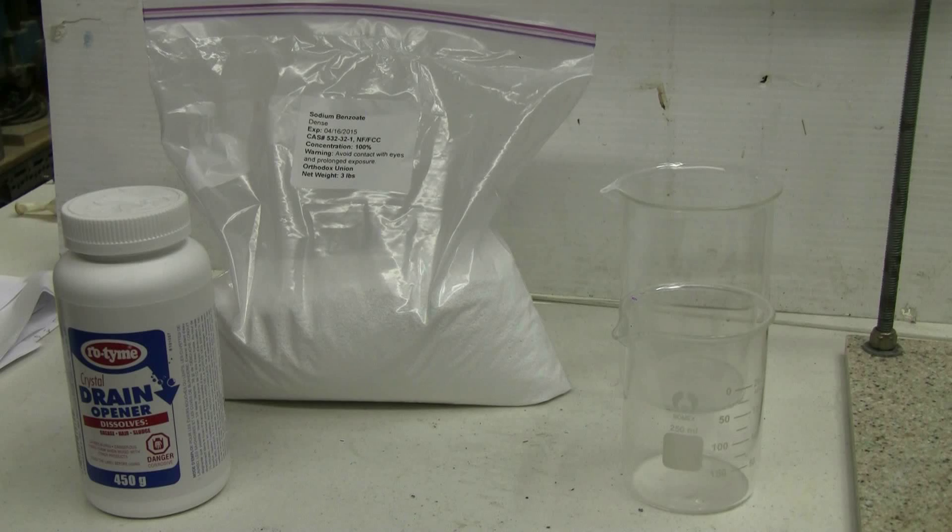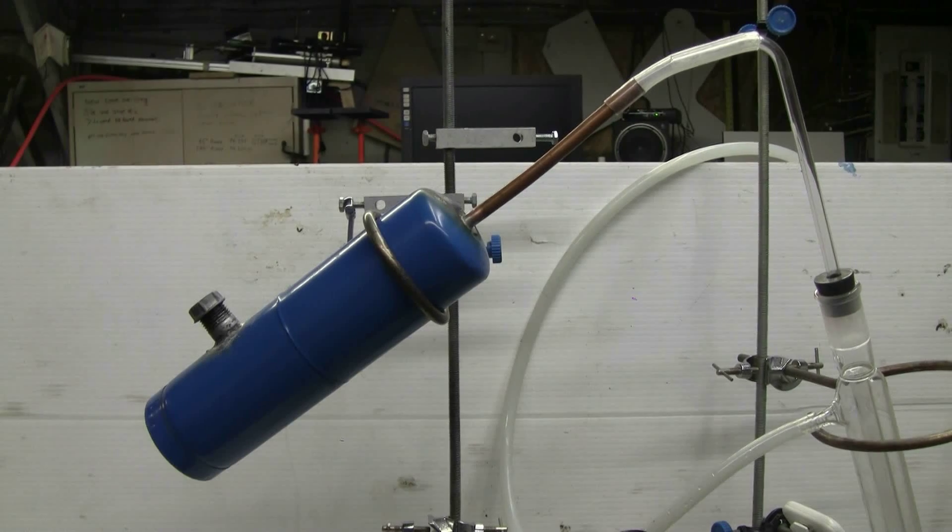My sodium hydroxide is in the form of a crystal drain opener. There's some little bits of aluminum or zinc in it that I've tried to pick most of them out, some are still there but it shouldn't interfere with the reaction I'm hoping. The sodium benzoate is just a standard bag of food grade sodium benzoate that's widely available online from many suppliers.